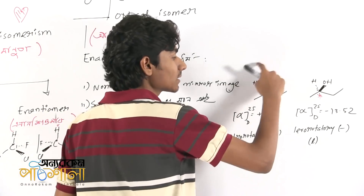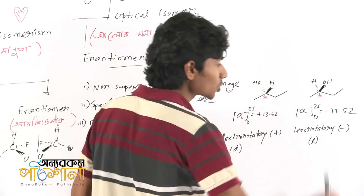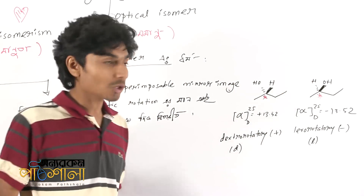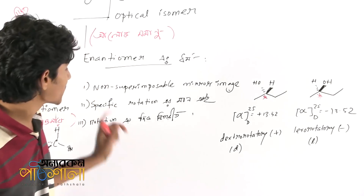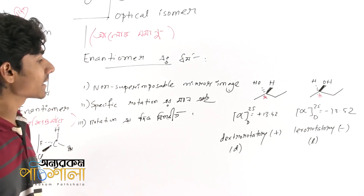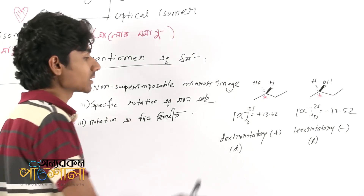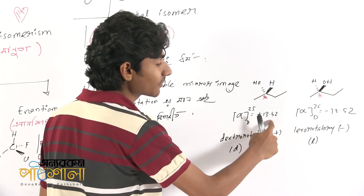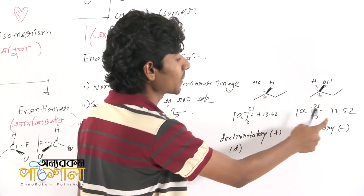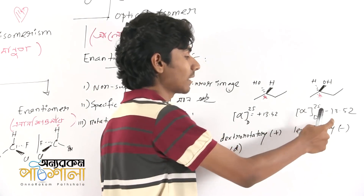This is the ETA and ETA. If you have the mirror image, this is superimposed. We have to do the specific rotation. This is the specific rotation of 13.52 degrees.